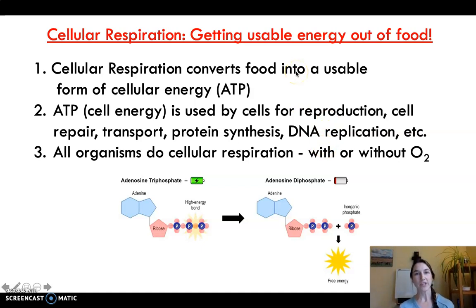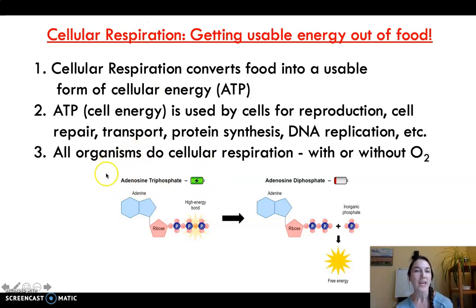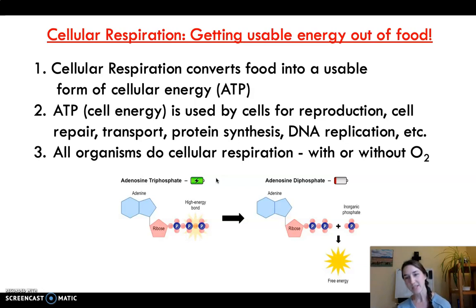Fundamentally, cellular respiration is simply getting usable energy out of food, which is pretty darn important. We are living things that are constantly using energy. The molecule that is gold for living things is ATP, adenosine triphosphate. As great as glucose is as a food source, in that form it is not useful to us. In order to power all of these different cellular processes — cell reproduction, cell repair, transport, making new proteins, copying DNA — all of this stuff requires ATP as the source of energy that can make those processes energetically favorable.